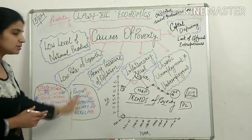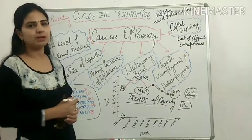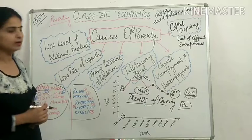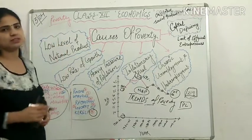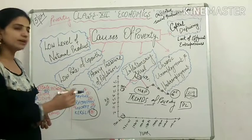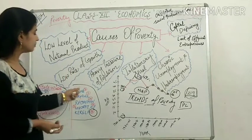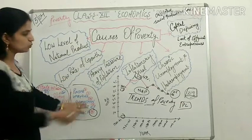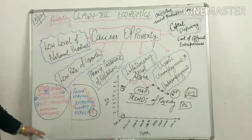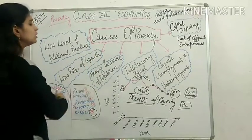On the other hand, some states are performing better. For example, only about 7–8% of the population faces poverty in Gujarat, only 8% in Punjab, about 11% in our state, and Haryana is also similar. These states have poverty rates much less than the 22% national average, meaning they are below the average poverty line.